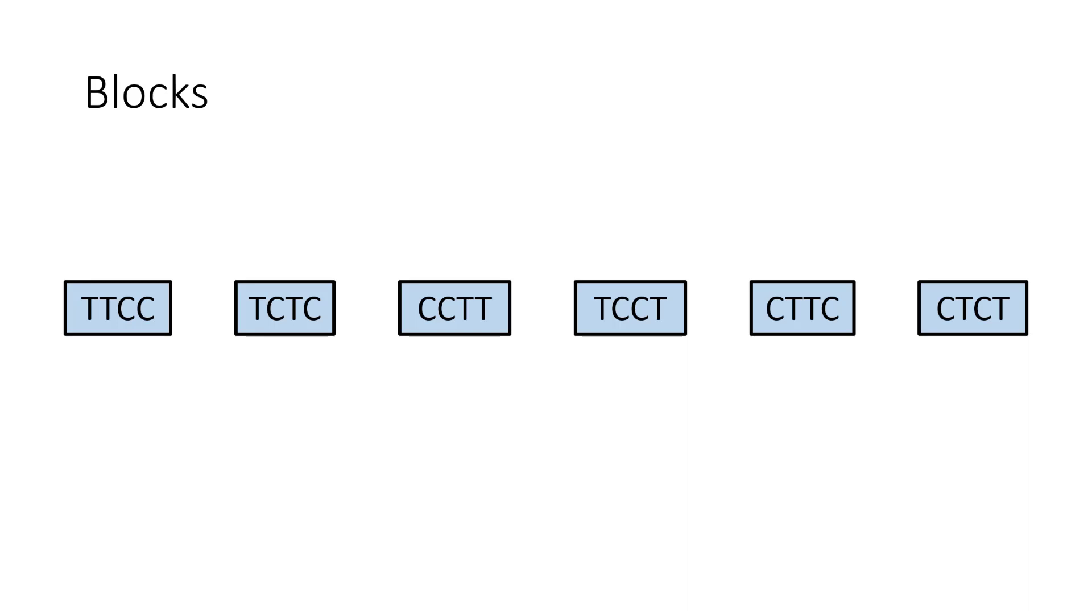If you have a block size of four and a treatment and a control group, these are all the different ways that participants could be randomly allocated into both groups evenly.